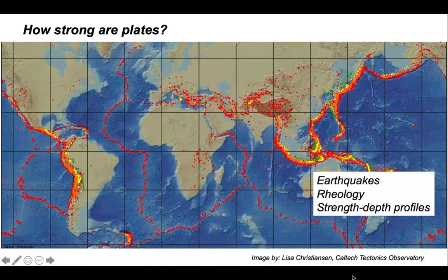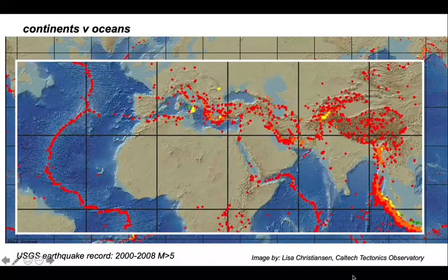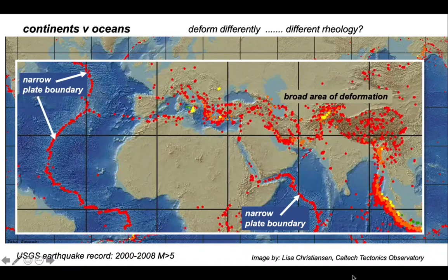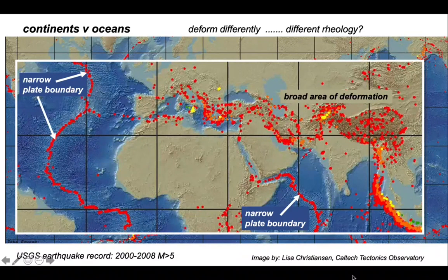So let's look at earthquakes. One of the most striking things about maps of earthquake distributions is the difference between continents and oceans. Plate boundaries in oceans are narrow, but you could hardly say that about the continents. There's a broad swathe of earthquake deformation across from Tibet all the way through to the Alps — it's really hard to put a plate boundary through there. So this difference between continents and oceans, they deform differently. Does this imply that they have a different rheology?